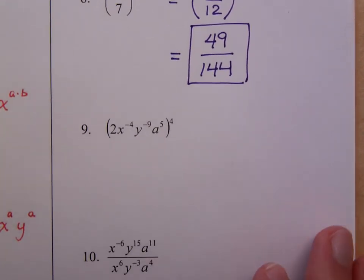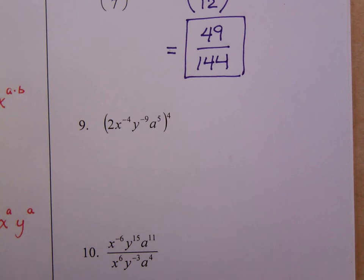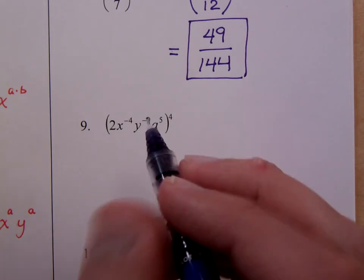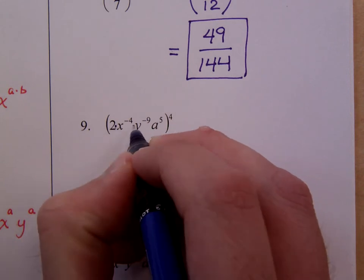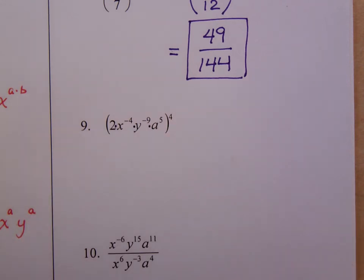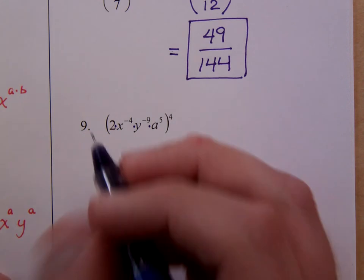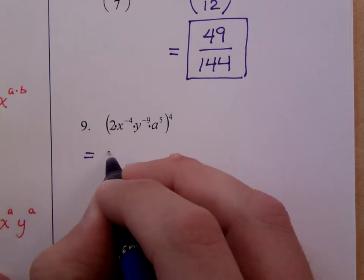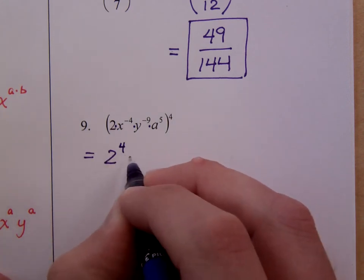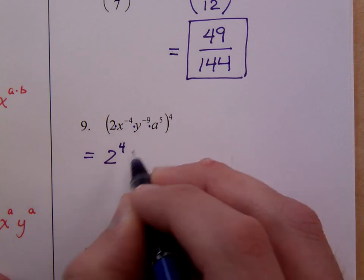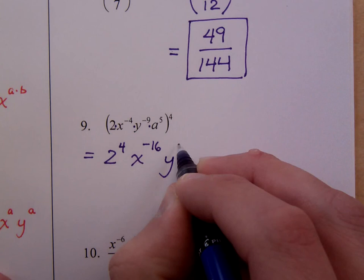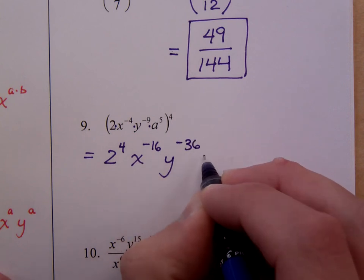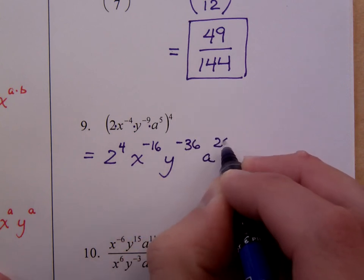And number 9. This is a problem that messes up a lot of students. Notice that you don't have 3 pieces here. You actually have 4. You have 2, you've got x, the y, and the a. So you have to raise 2 to the 4th power. x to the negative 4th to the 4th becomes x to the negative 16th. This is y to the negative 36th. And a to the positive 20th.